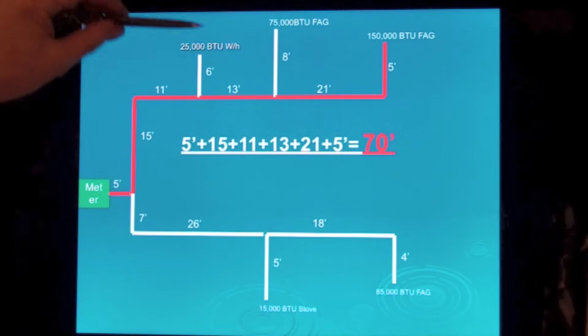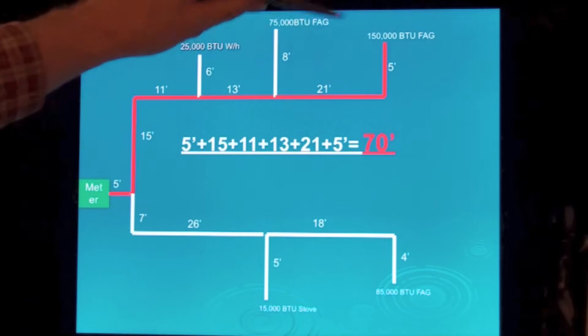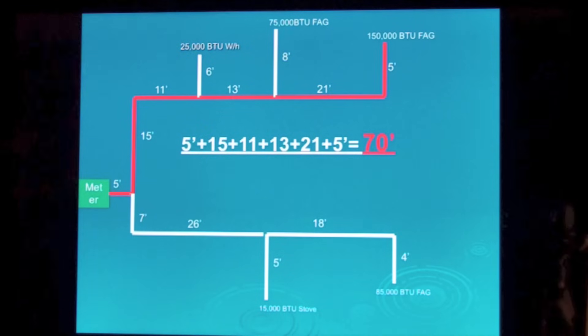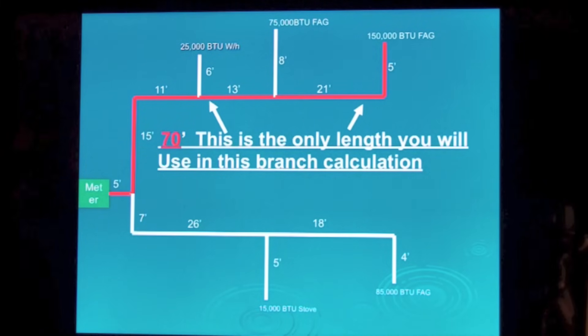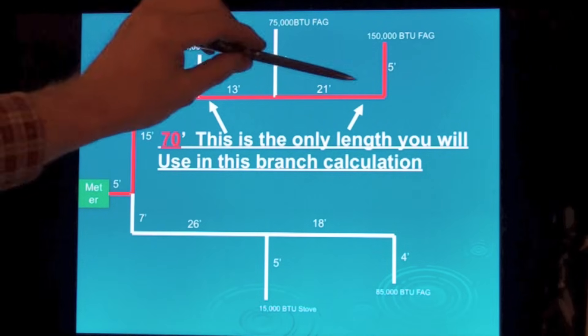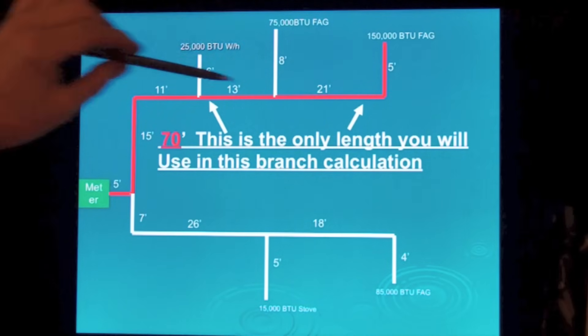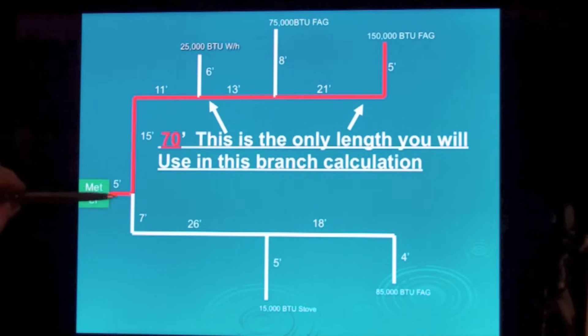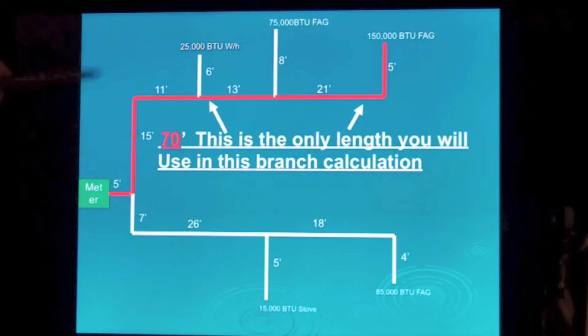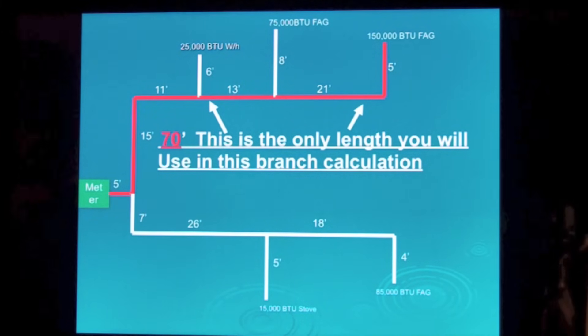Now we're not doing these drops or anything, just the main branch line out to the last appliance. This is the longest one, so this is the only length you will need to make this branch calculation. You're going to take the longest branch and the first thing we're going to do is size this five foot piece here.